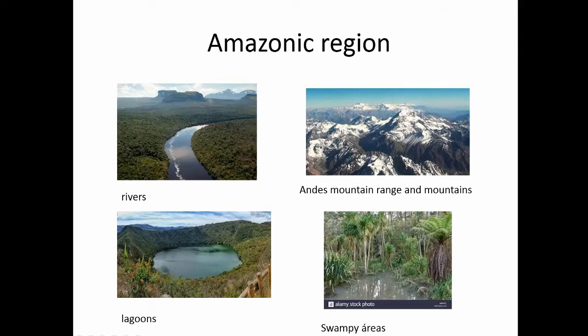Amazonic region. It is made up of the Andes mountain range and plains that extended towards the east. The relief of the Amazon region is composed by extensive plains, tropical jungles with swampy areas and lagoons, and contain rivers.